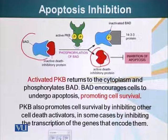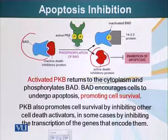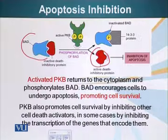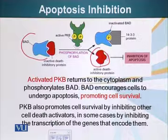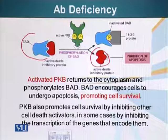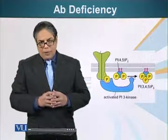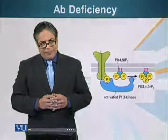In other cells — earlier we talked about B cells that make antibody — there is a protein called PDK1, which abbreviates for phosphatidyl inositol phosphate dependent kinase 1. This molecule has a pleckstrin homology domain which allows it to bind PIP3 and become activated. Remember, this is a kinase — K stands for kinase — it can add phosphate groups to its substrate molecules.